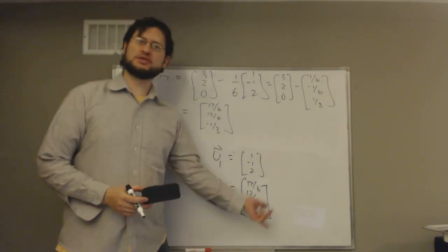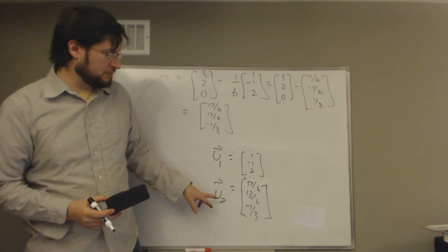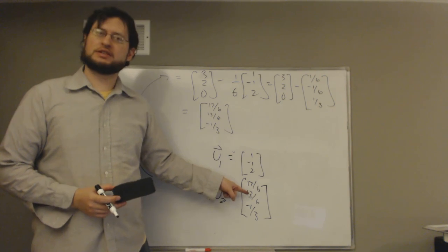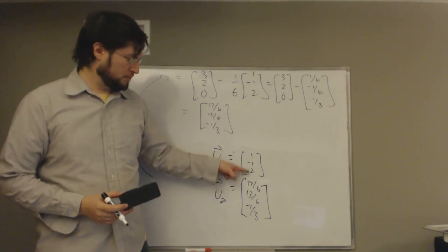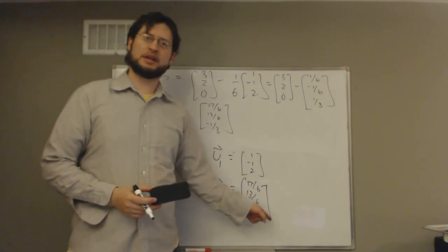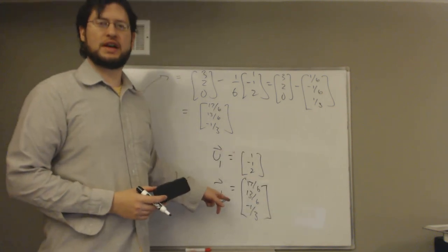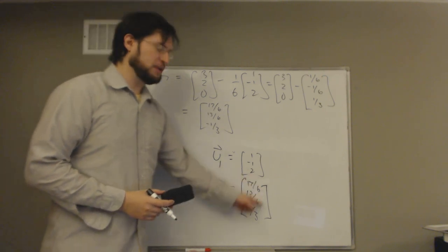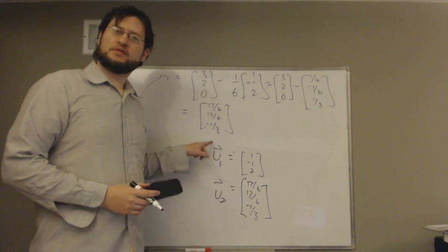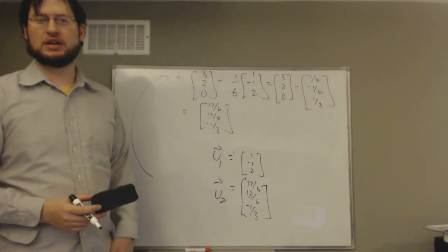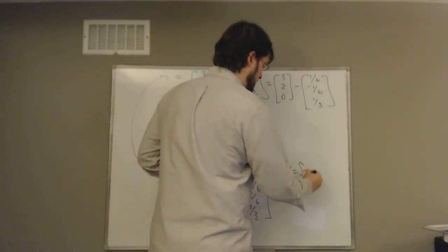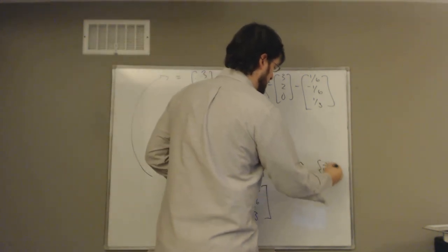So U1 = (1, −1, 2) and U2 = (17/6, 13/6, −1/3). We can verify: U1 · U2 = 17/6 − 13/6 − 2/3 = 4/6 − 4/6 = 0 as required. Because of the way U2 is constructed, the span of U1 and U2 is the same as the span of V1 and V2, so W = span{U1, U2}.